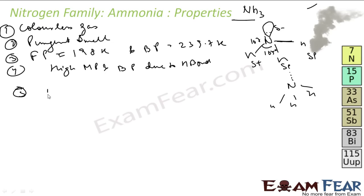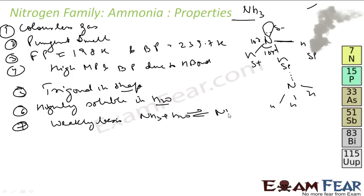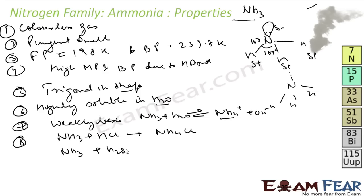The shape of NH3 is trigonal pyramidal. It is highly soluble in water because it has hydrogen bonding. NH3 is weakly basic — it reacts with water to form ammonium ions and OH⁻. Since it is basic, it reacts with acids to form salts. For example, NH3 reacts with HCl to form NH4Cl, and with sulfuric acid to form (NH4)2SO4.